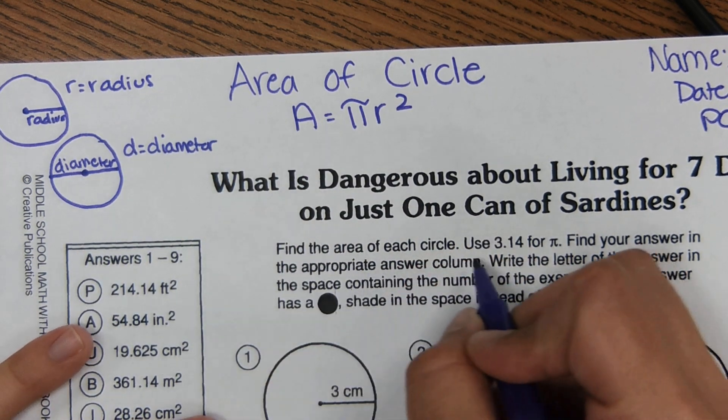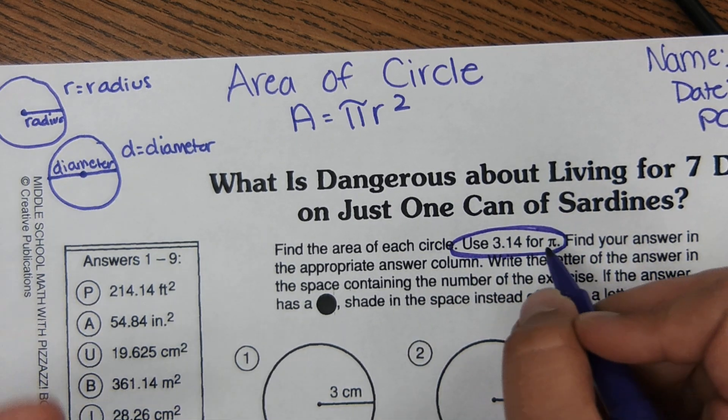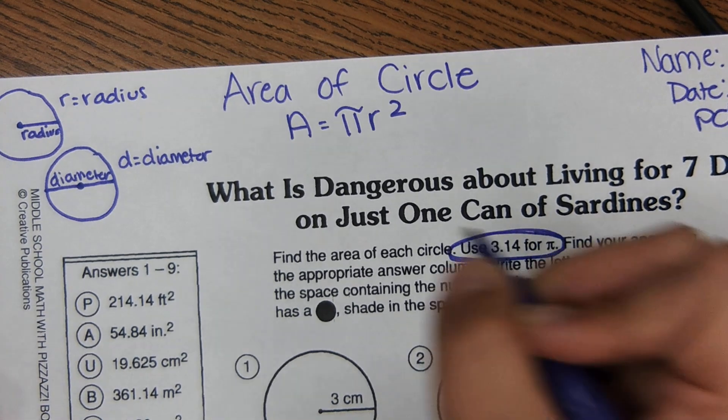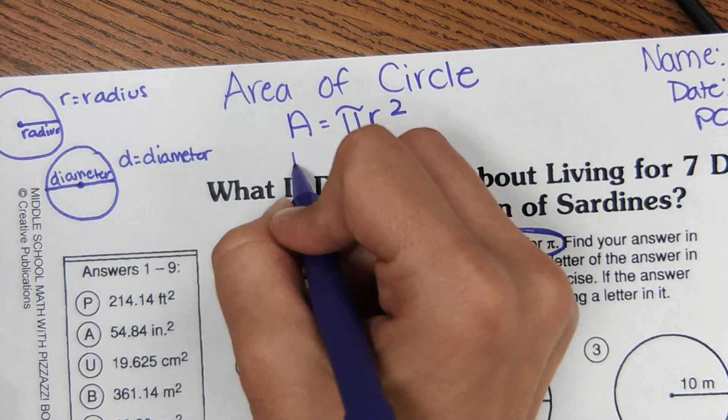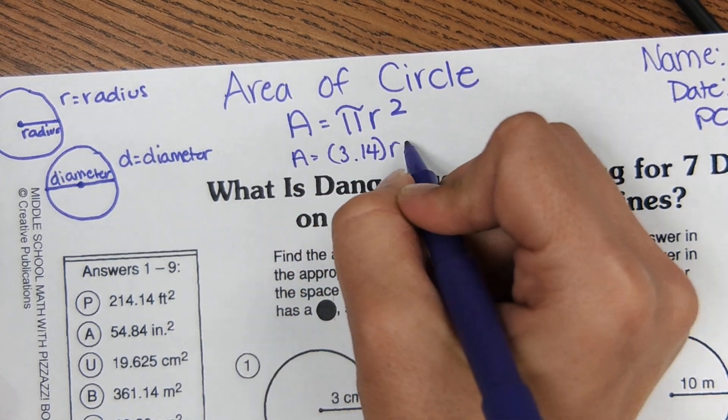Other times, in the problem, they'll say use 3.14 for pi. And in this problem, they say use 3.14 for pi. So for this equation, area equals 3.14 radius squared.